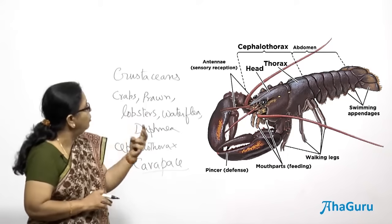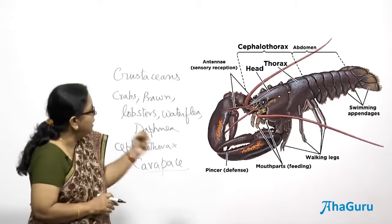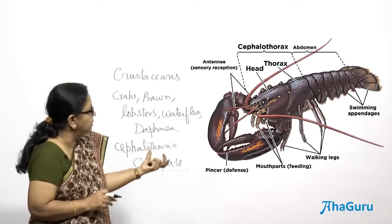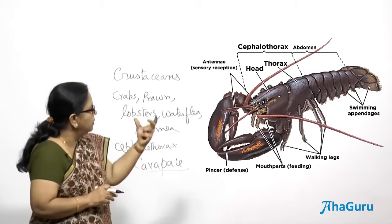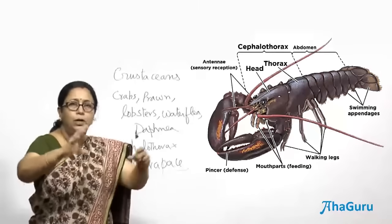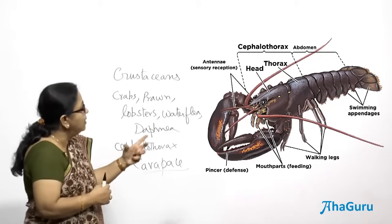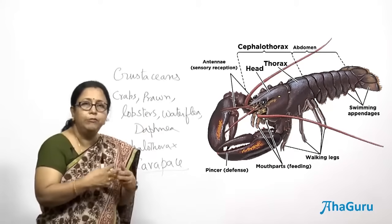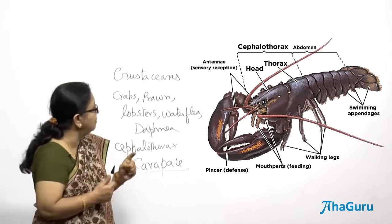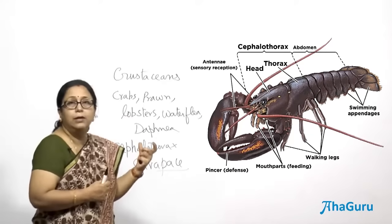As you can see in this picture, crustaceans have two pairs of antennae which help them feel the environment. Every segment has some appendage. The first pair of appendages in lobsters or prawns are used as pincers, which help to grab and grasp prey. Different appendages are modified for different ways of catching prey and feeding. So they have appendages in all segments, a cephalothorax, two pairs of antennae, and a carapace.